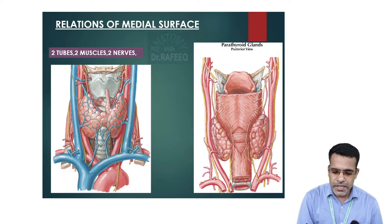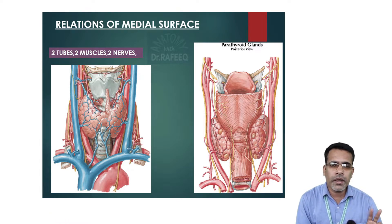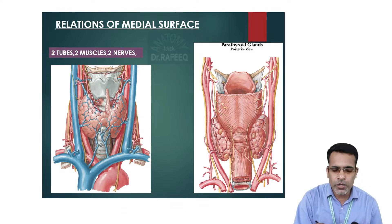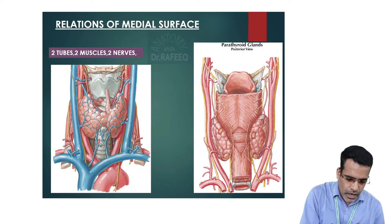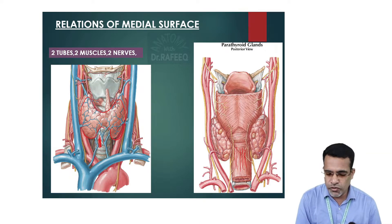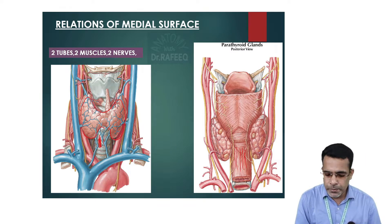The medial surface of the thyroid gland is related to two tubes, two nerves, two muscles, and two cartilages — everything in pairs of two. The two tubes are the trachea (windpipe), located just behind the thyroid gland in the medial aspect, and the esophagus (foodpipe) further behind the trachea.